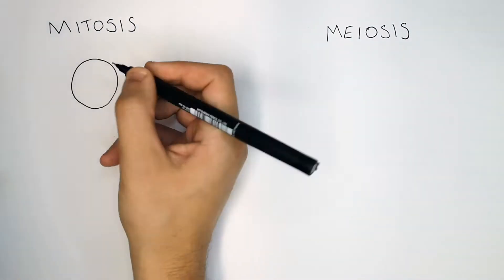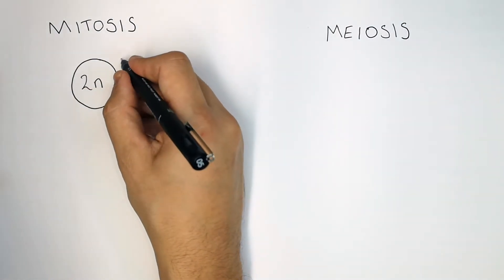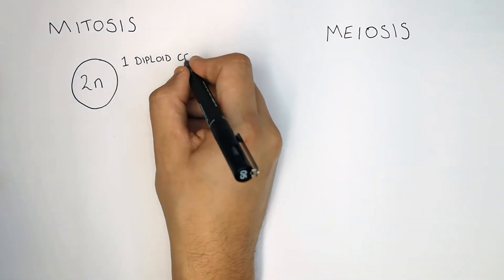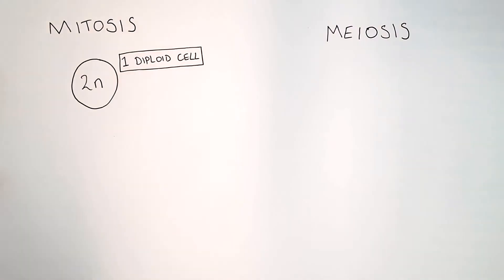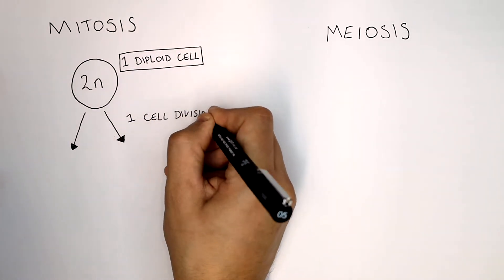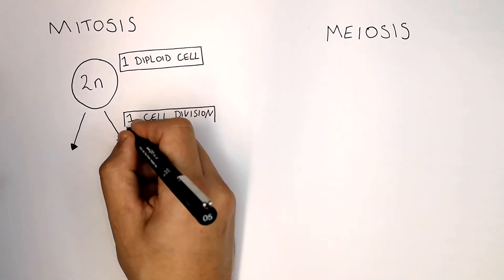So mitosis starts off with one diploid body cell, one diploid body cell with two sets of chromosomes. This body cell is then going to divide and it undergoes one cell division.